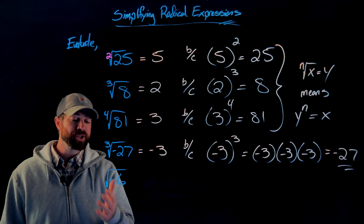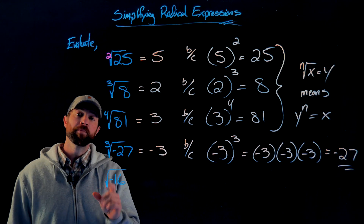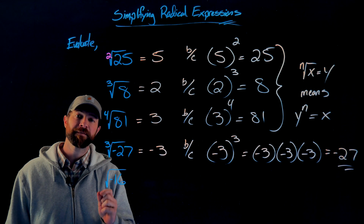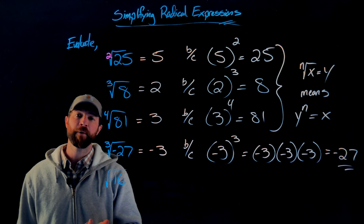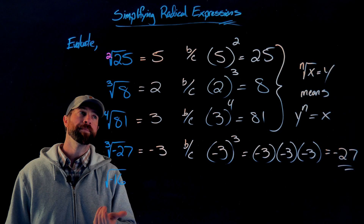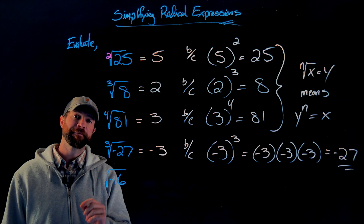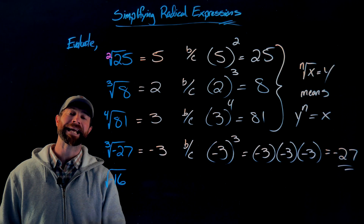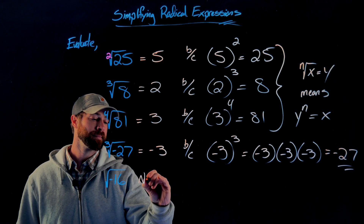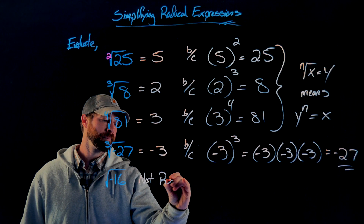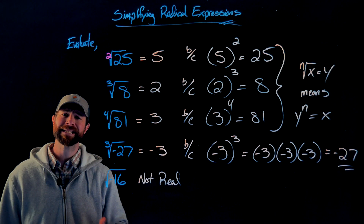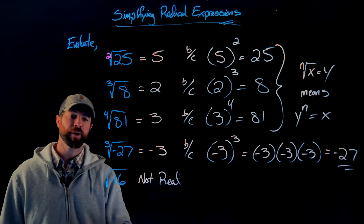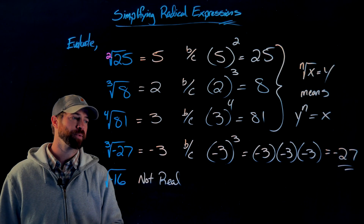For the square root of negative 16, you might think the answer is negative 4, but negative 4 times negative 4 equals positive 16. There's no way to multiply a real number by itself to get negative 16. We say it's not real — it doesn't exist in the real number system, though there are complex solutions to this problem.